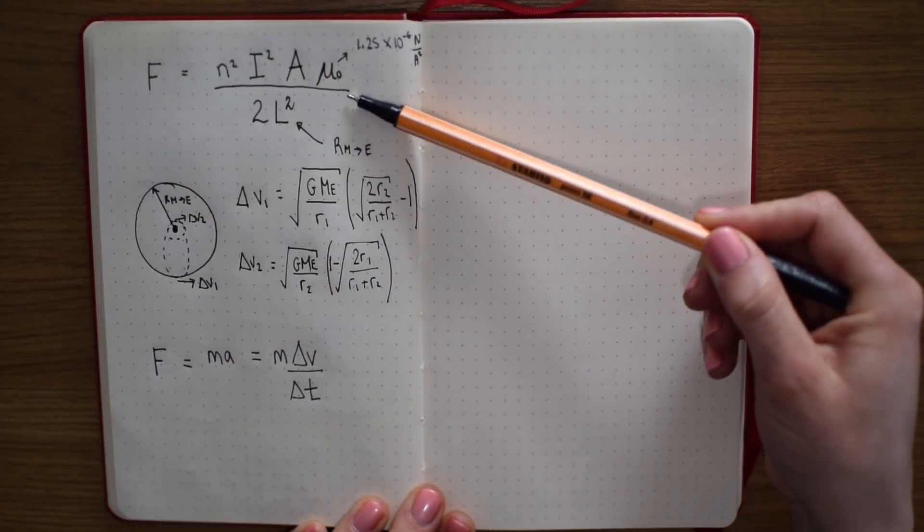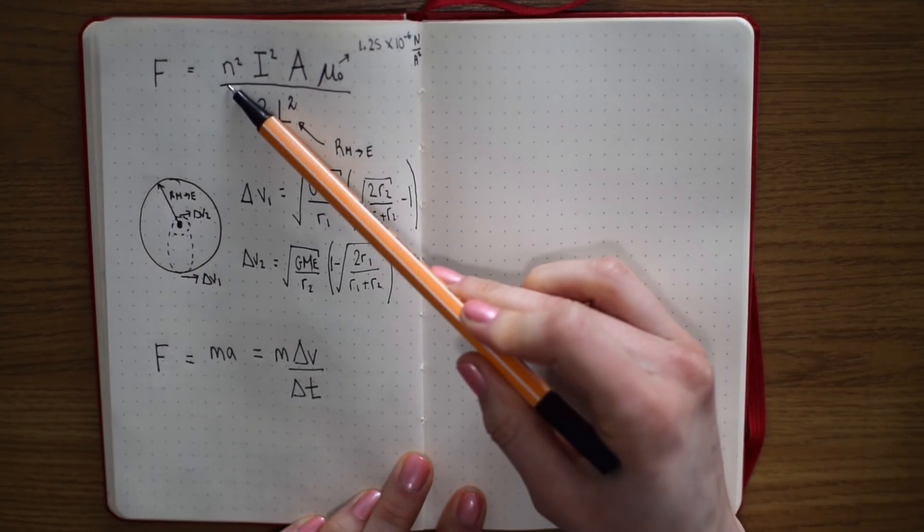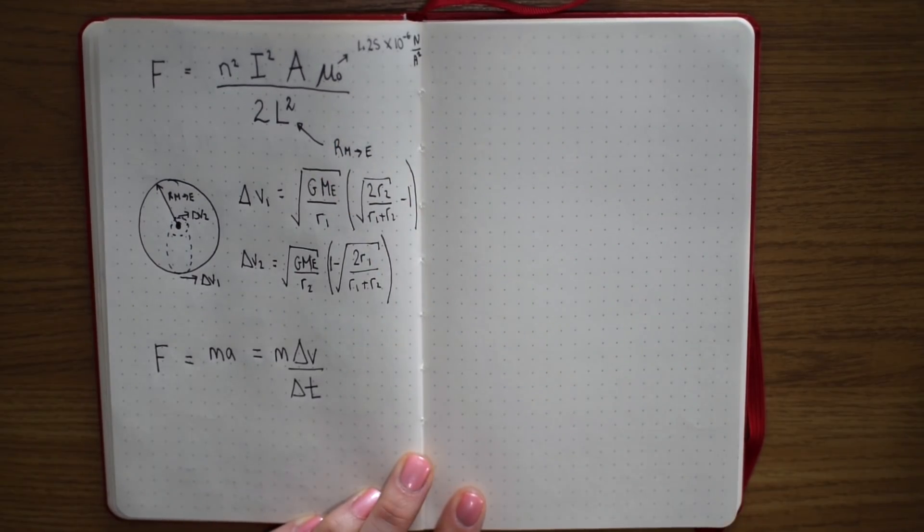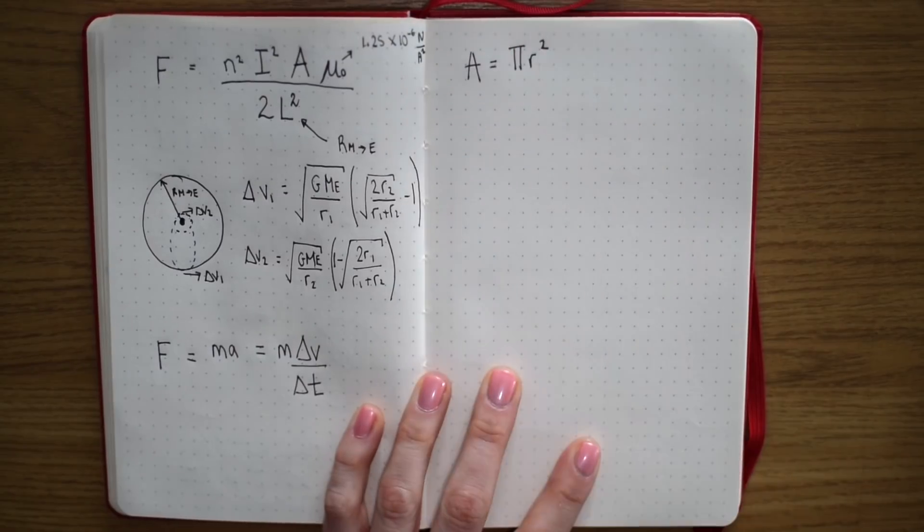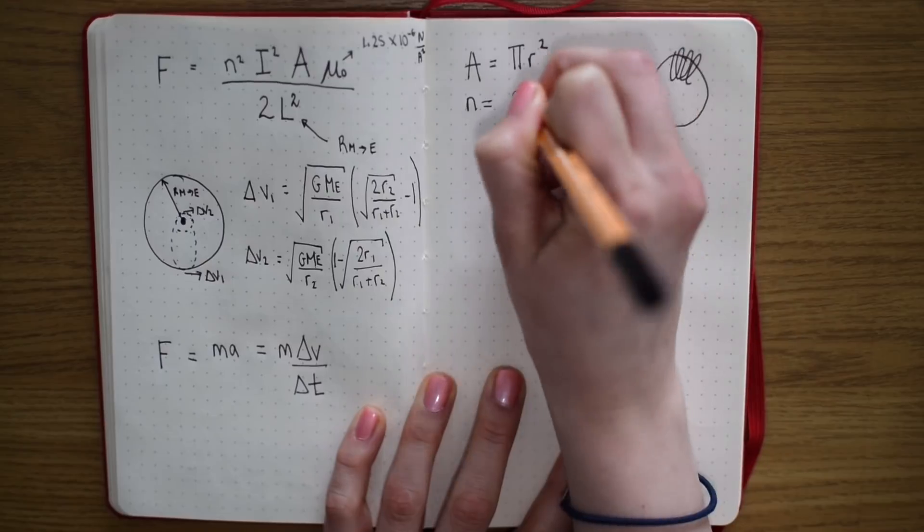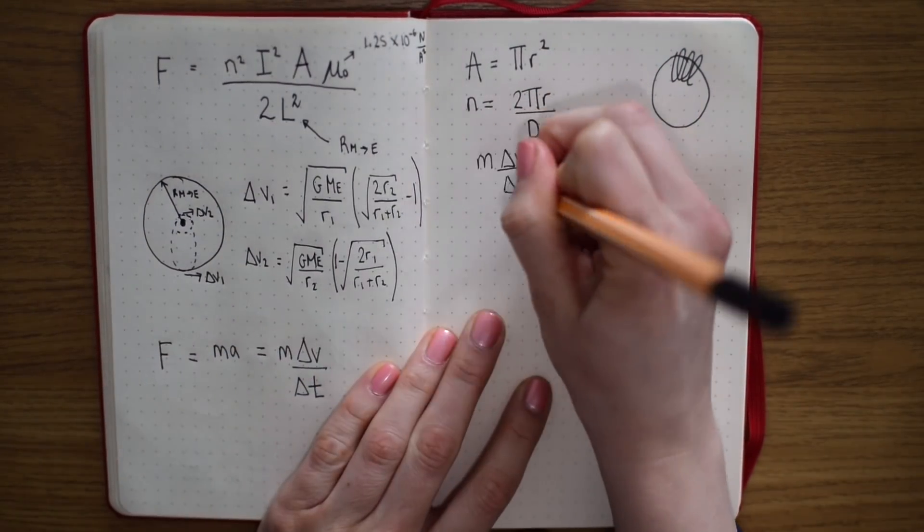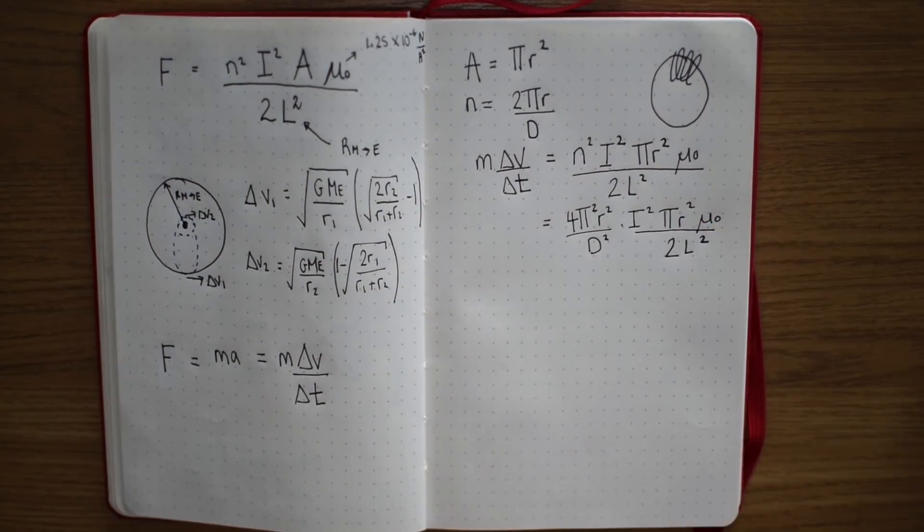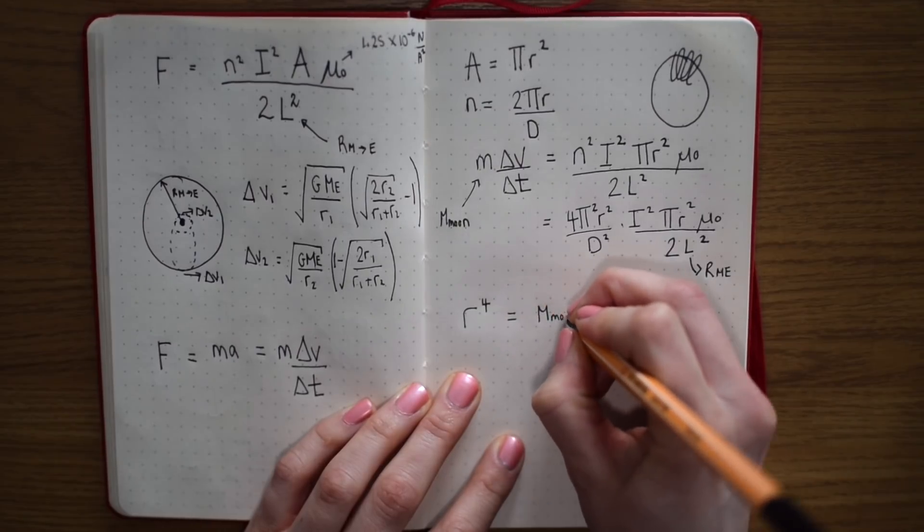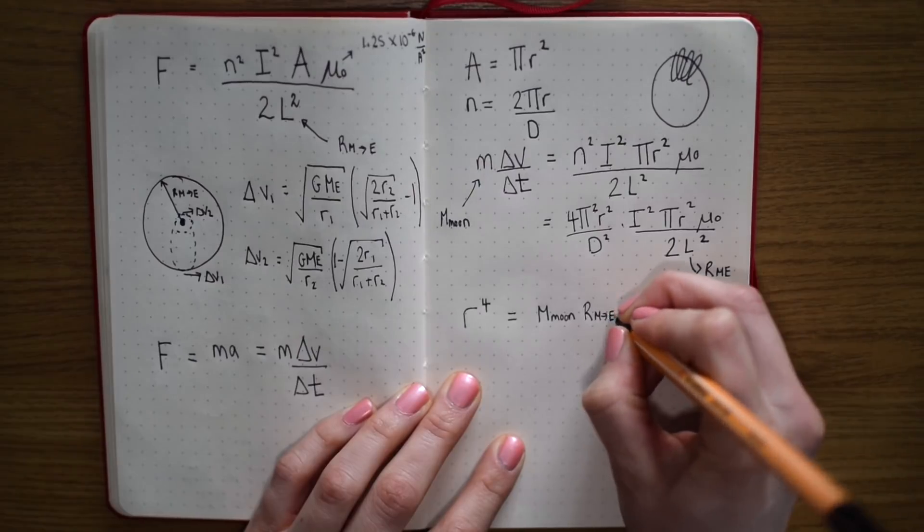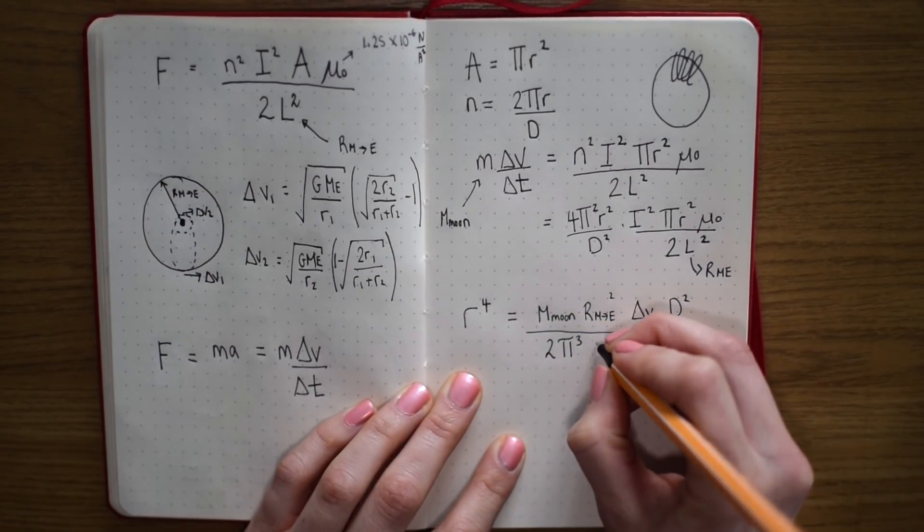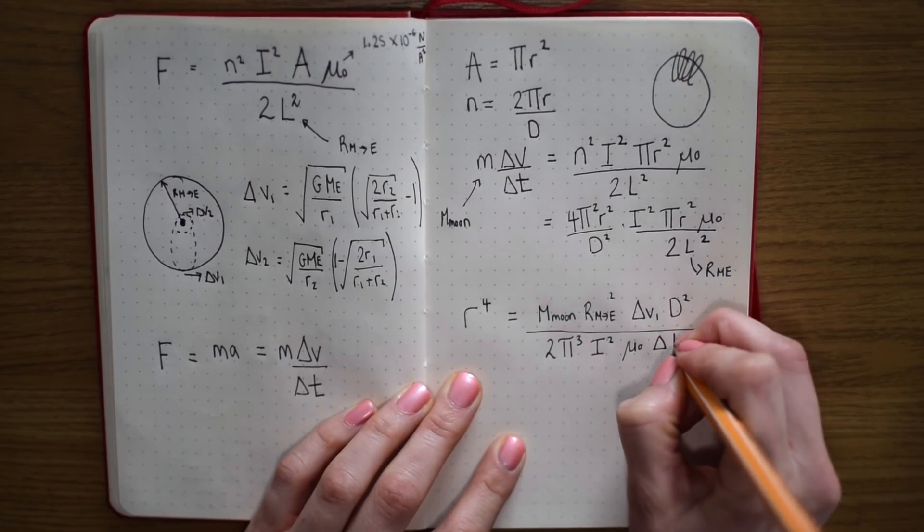Then all we have to do is balance these two equations. But the problem is we still don't know how many coils of wire we have, n, or the current running through them, i. And we're trying to work out the size of the electromagnet here. Maybe a radius instead of an area would be a better thing to work with. If we do that then the cross-sectional area of the magnet is just pi r squared and the maximum number of coils that we can fit around it, again back of the envelope, not getting into the nitty-gritty here, but we can assume that it's essentially the circumference of the circle divided by the diameter of the wire we're using. So let's substitute those in and then solve for r the size of the electromagnet. Then we get r to the power of four, i.e. r times r times r times r is the mass of the moon times by the distance between the moon and the earth squared times by the change in velocity we need times by the diameter of the wire squared, all divided by two times pi cubed times by the current squared times by the permeability of the vacuum times by the time that this change in velocity happens in.